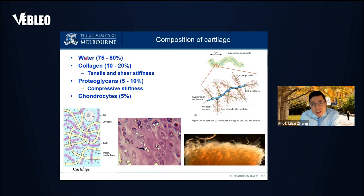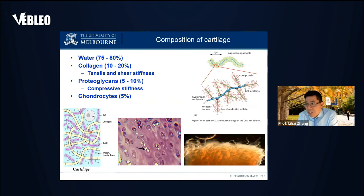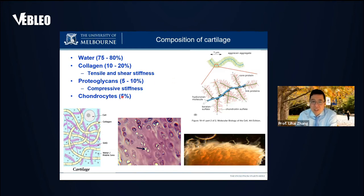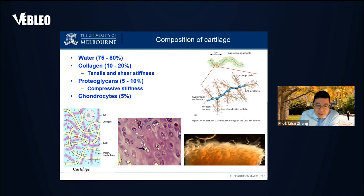The cartilage composition is 75 to 80 percent water. The fibers — called collagen fibers — carry the tensile and shear forces of the tissue. We also have proteoglycans, which are negatively charged. Under loading, when negative charge molecules are squeezed into a very small volume, they generate compressive stiffness through repulsive forces. Chondrocytes make up about 5 percent — they are the cartilage cells responsible for self-healing throughout the life cycle of the cartilage tissue.